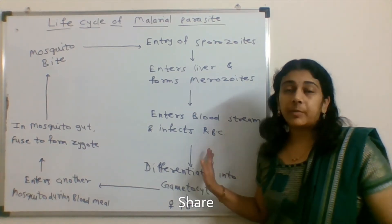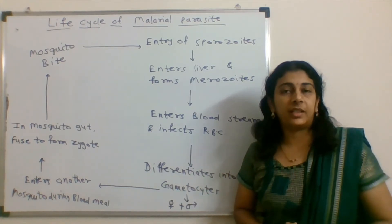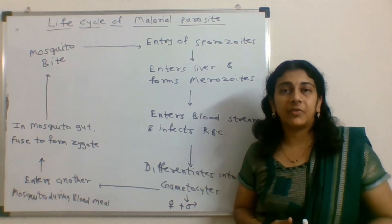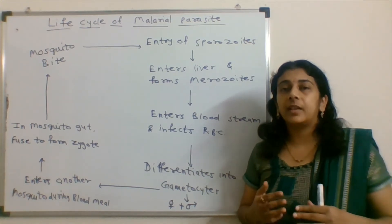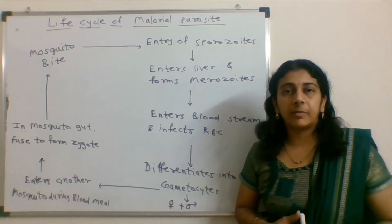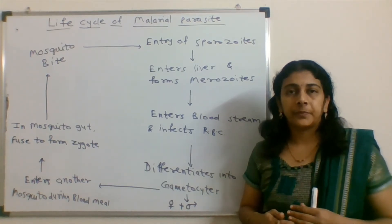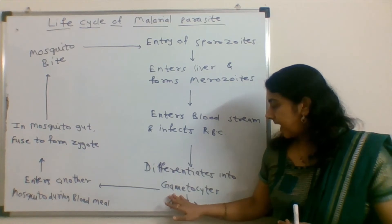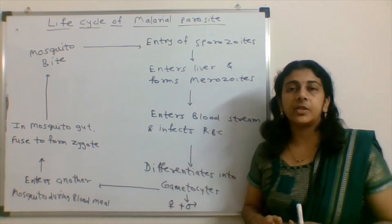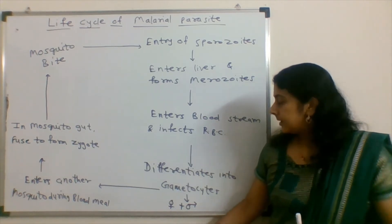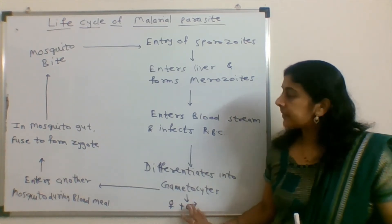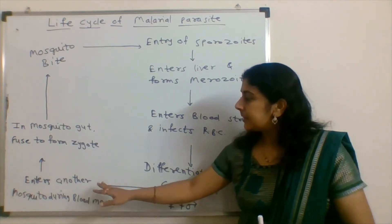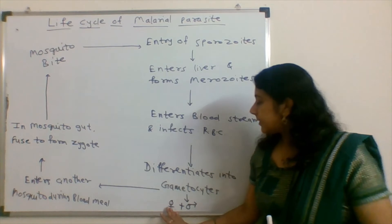During this RBC infection, the symptoms and pathology of malaria initiate. In the RBCs, merozoites undergo successive division, then rupture the RBCs and infect other RBCs, and this cycle continues. After this, in the RBC, they differentiate into gametocytes — the merozoites differentiate into gametocytes, which further form female and male gametes.